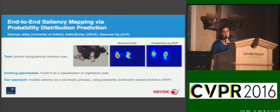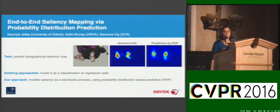The task here is to predict the saliency landscape. Given an input image, we want to predict a heat map that highlights the regions that humans will attend to at a quick glance of the image.